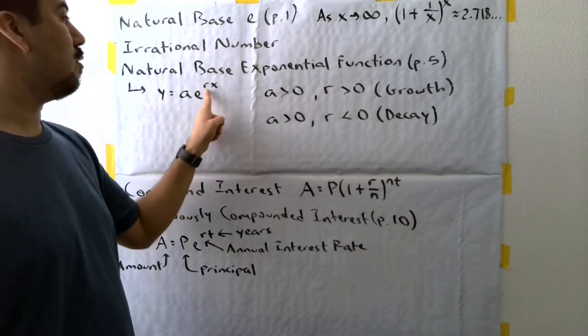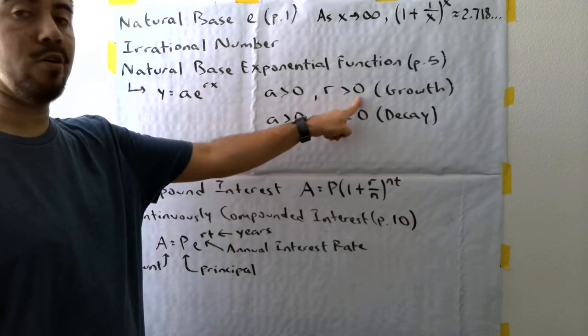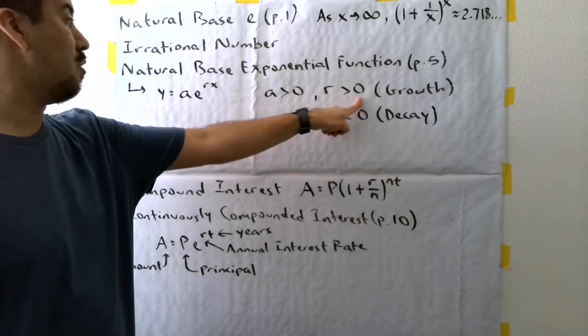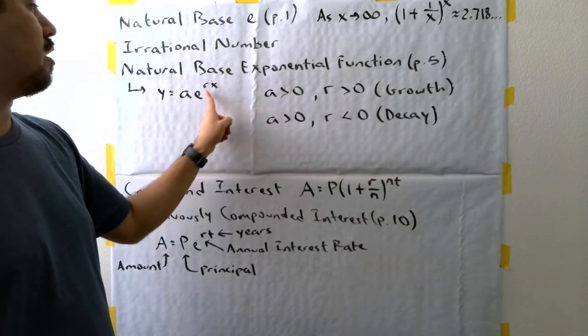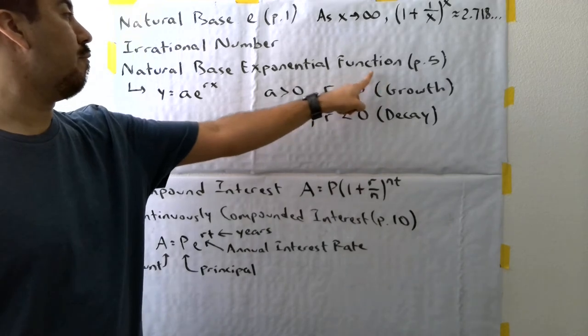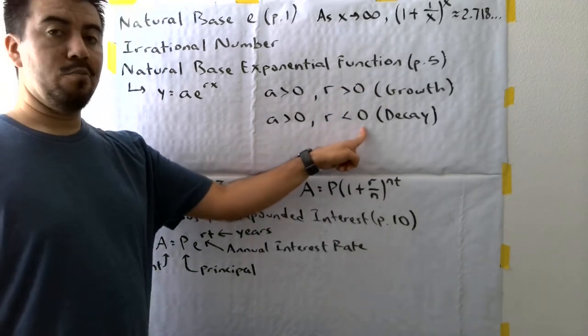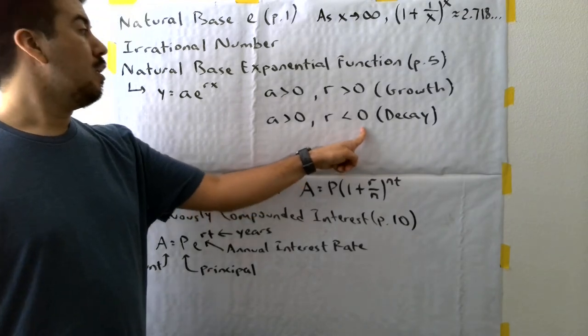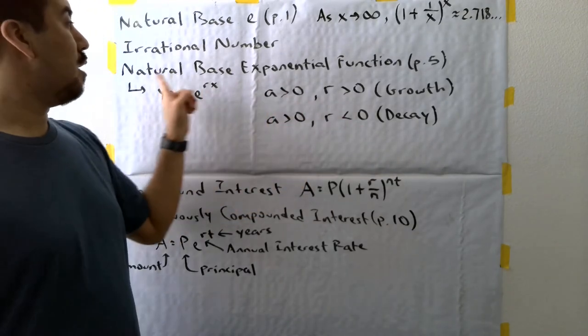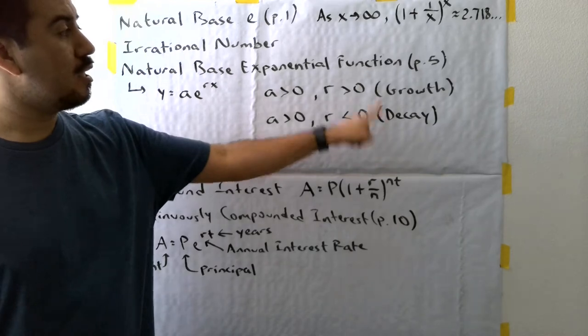Now, here's where we differentiate whether it's growth or decay. It has to do with the R value. If the R value that you see right there is greater than zero, basically if it's a positive value for the exponent, you're going to have an example of a natural base exponential growth function. But if the R value is less than zero, meaning it's any negative value placed there, then it's an example of a natural base exponential decay function.